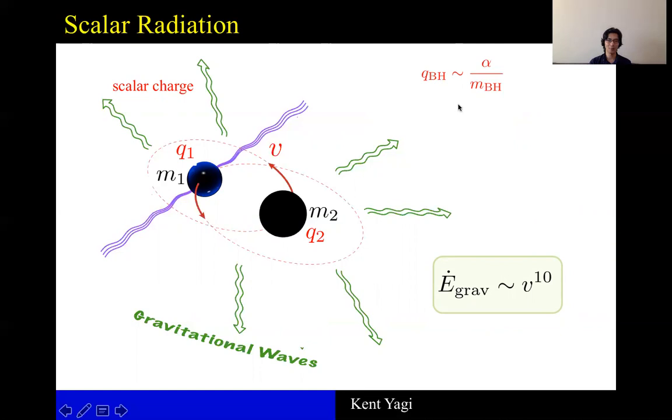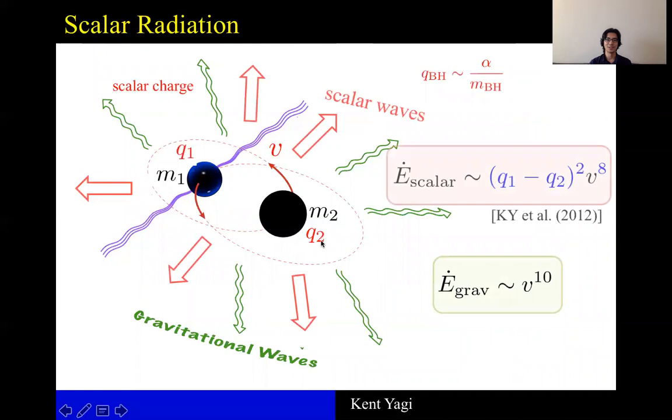This luminosity is given by this form where it depends on the difference in the scalar charges and also velocity to the eighth power. The difference in the velocity dependence comes from the fact that gravitational radiation is quadrupolar, while scalar radiation is dipolar.